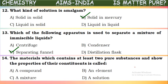The materials which contain at least two pure substances and show the properties of their constituents is called a mixture. When two or more pure substances combine together forming a matter which shows the properties of the constituents mixed in it, that is called a mixture.